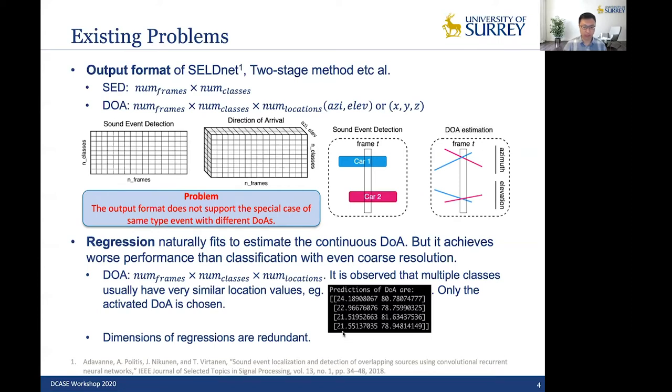For example, at certain frames, the predictions of DOAs are like this. There are four rows, which indicates there are possible four events occurring. And you only need to choose one of them. But look at the values that are pretty similar. So only the activated DOA is chosen. But the values are very similar. That means that the dimensions of regressions are redundant.